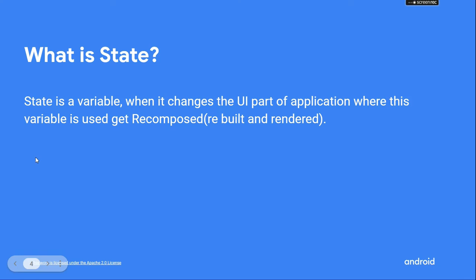So what is state? State is nothing but a variable. When it changes, the value of the state variable changes and the part of the UI where this variable is used gets recomposed. Recomposed means that particular composable function will run again and will be rendered on the screen again. A single state can manage the complete UI of the application.